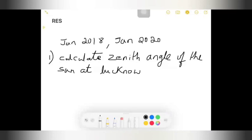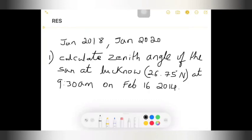The latitude angle at Lucknow is given as 26.75 degrees north. The time is also given as 9:30 a.m., and the date is given as Feb 16, 2014. This was the question given.